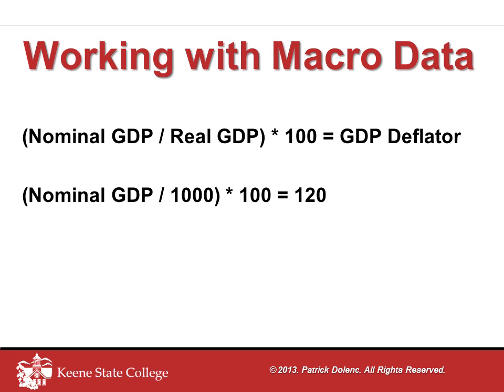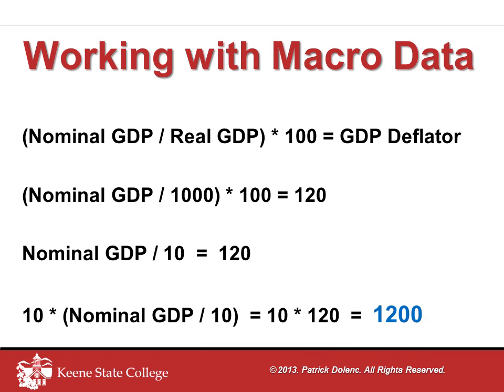Initially, we can simplify the division by 1000 and the multiplication by 100 as actually the division by 10. Verify this for yourself if you need to by adding an extra step. The next task is to isolate nominal GDP by itself. We can accomplish this by multiplying both sides of the equal sign by 10. This gives us nominal GDP isolated on the left and 120 times 10 on the right. 120 multiplied by 10 gives us a nominal GDP figure of 1200.